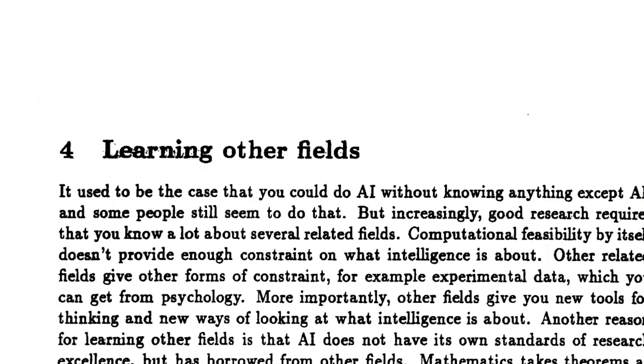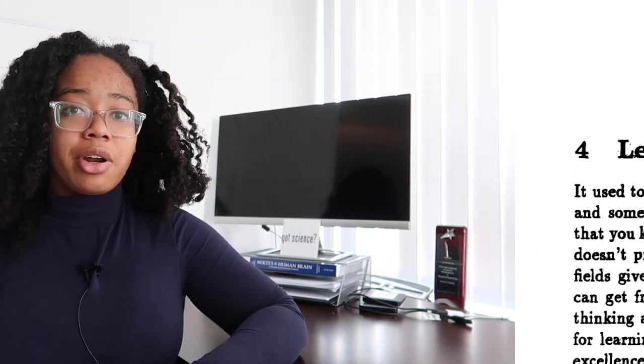They recommend attending conferences and meetup groups if you can, which I absolutely recommend. However, this has become increasingly difficult as attending can be expensive and many conferences are placing caps on the number of people they'll allow in. I was really impressed that this guide also had a section on diversifying your research interests to include the humanities, social sciences, philosophy, and neuroscience in order to get alternate perspectives on your work. They don't discuss AI ethics — mostly because that wasn't really a field at the time — but obviously that would be added to the list now in 2020.